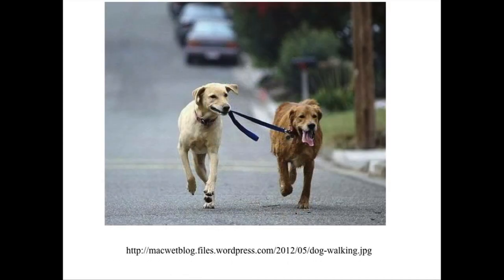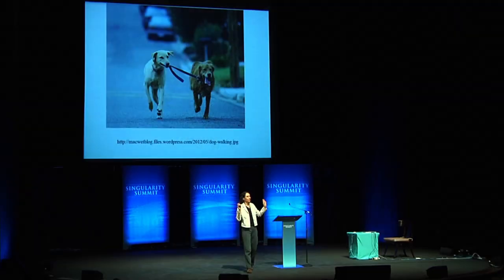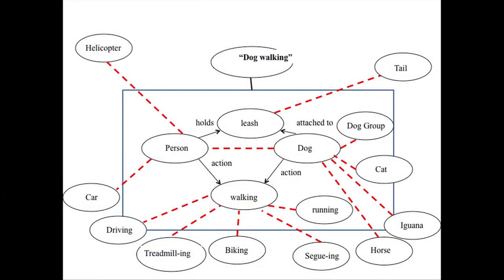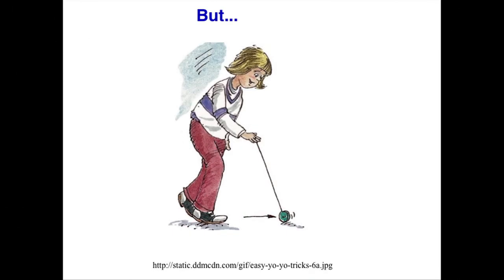It goes on and on and on. This really illustrates the remarkable fluidity of human concepts — that we really recognize these visual or any kind of abstract concept in a very fluid way. We have to start thinking about how people, and how could we get computers, to make the right kinds of conceptual slippages.